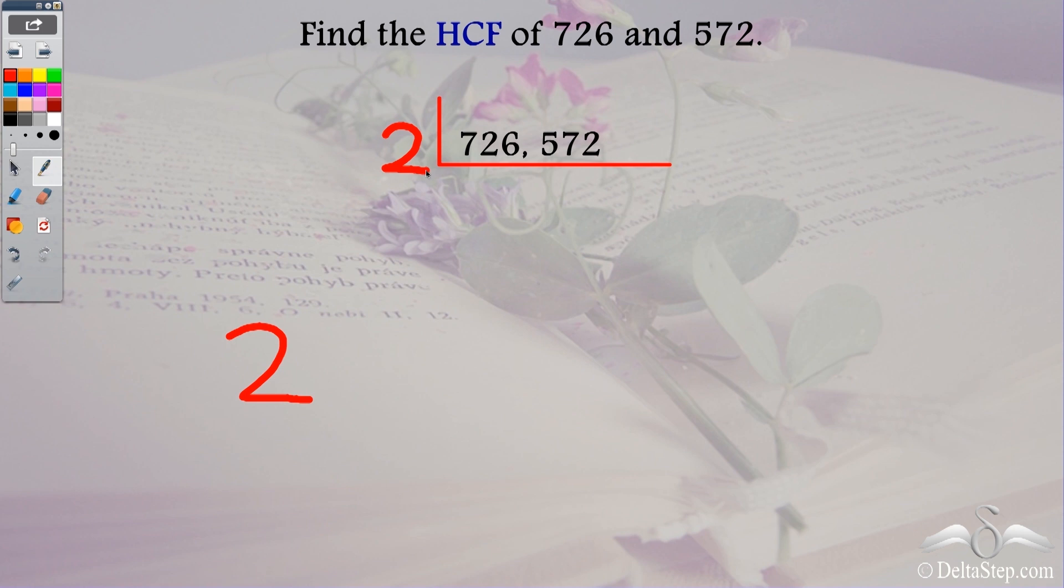So 726 when divided by 2 gives 363 as the quotient and 572 when divided by 2 gives quotient 286. So you can divide and check. So you will get the quotient as 363 and 286.